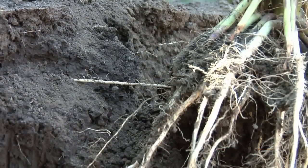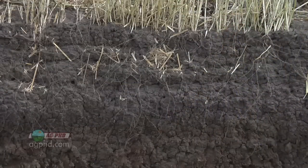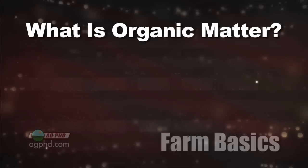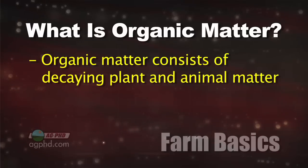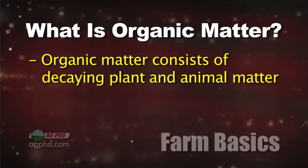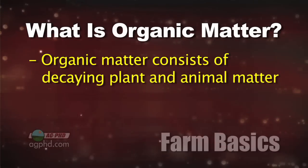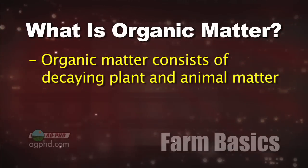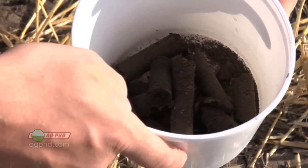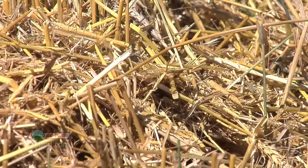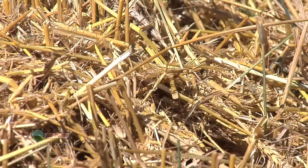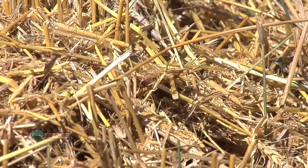During our Farm Basics time today, we wanted to discuss organic matter nutrient release. First of all, what is organic matter? Well, organic matter is basically decaying plants or animal residue that are out in your field. And when you think about your soil, it's not just pieces of dirt. Those little pieces of soil have lots of living things around them, and those living things need some organic material in order to have a home to survive on.